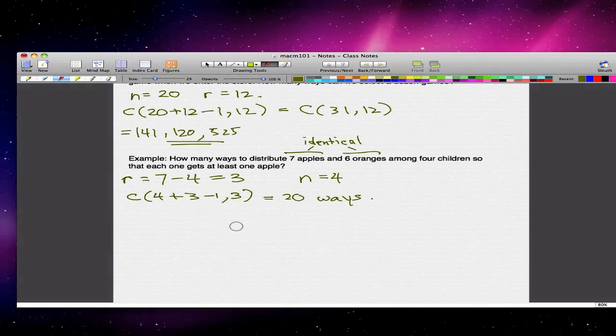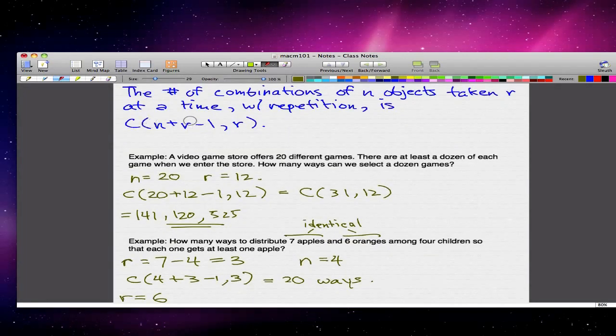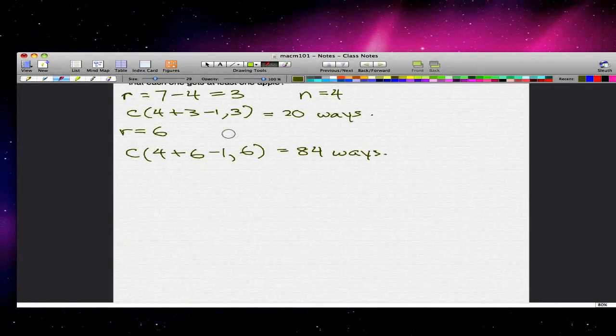It's much the same way, but in this case for oranges, we don't have to distribute one orange to each child. So a child can, there's the case where a child does not get any oranges at all. So r equals 6, and our n is kept the same because the children don't change. So what we actually do is use the formula again: n equals 4, r equals 6. We do the minus 1 following the formula and we choose 6. And this will give us 84 ways because we follow the formula n+r-1 choose r.